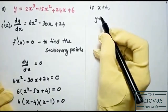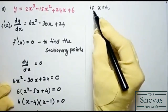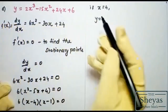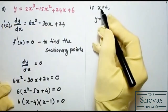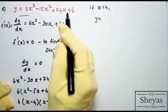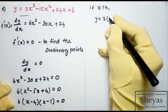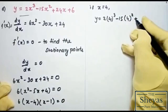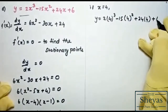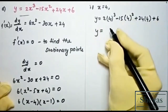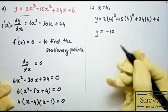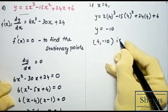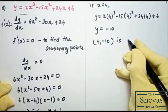Now substituting x = 4 into the equation: y = 2(4)³ − 15(4)² + 24(4) + 6. When you calculate this you get y = −10. So the point (4, −10) is a stationary point.